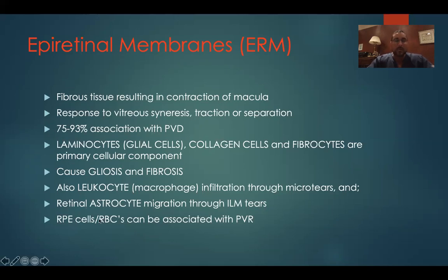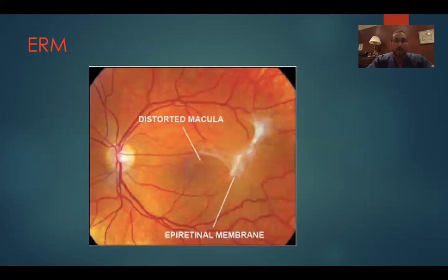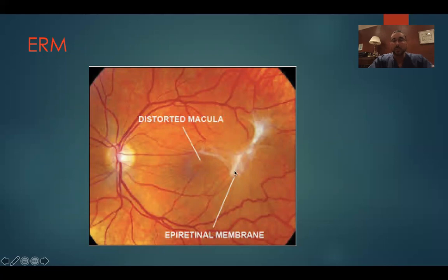Leukocytes as well as retinal astrocytes will migrate through small tears in the retina and small tears in the ILM or internal limiting membrane, settling on the surface of the macula, thus leading to scar tissue and ultimate contraction. Retinal pigment epithelial cells and red blood cells can also cause epiretinal membranes. These are typically associated with retinal tears or detachments and are associated with a form of PVR — proliferative vitreoretinopathy. These membranes will usually be a little more severe, actually easier to remove because they're so pronounced, but can have a more significant impact on vision. Here's a picture of an epiretinal membrane — you can see the distorted macula. One of the classic features is straightening of the blood vessels over the papillomacular bundle.